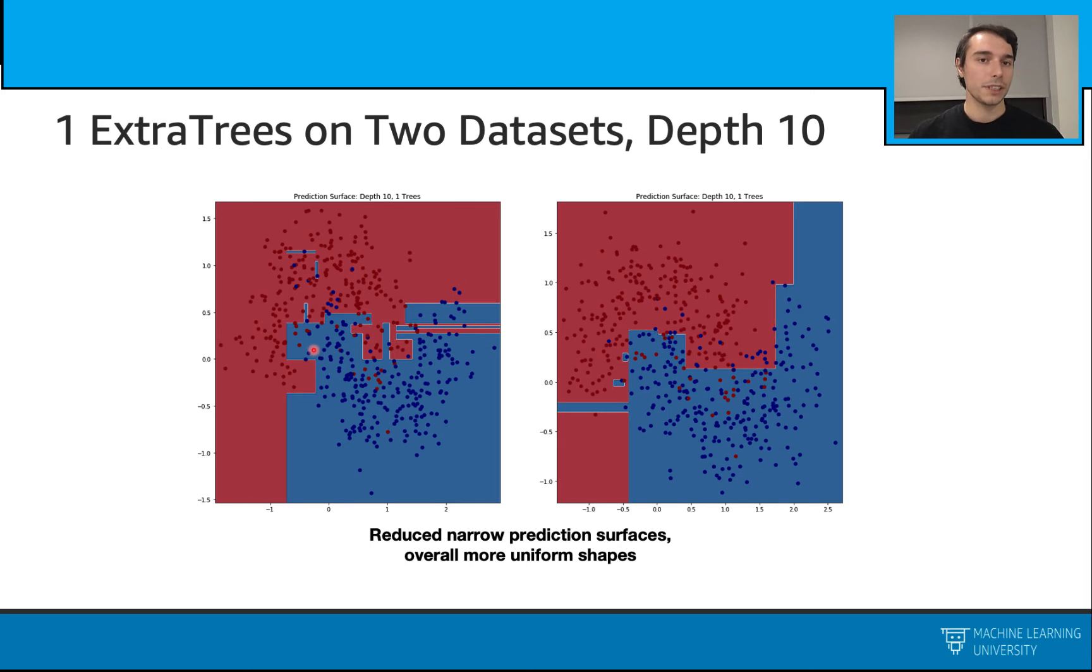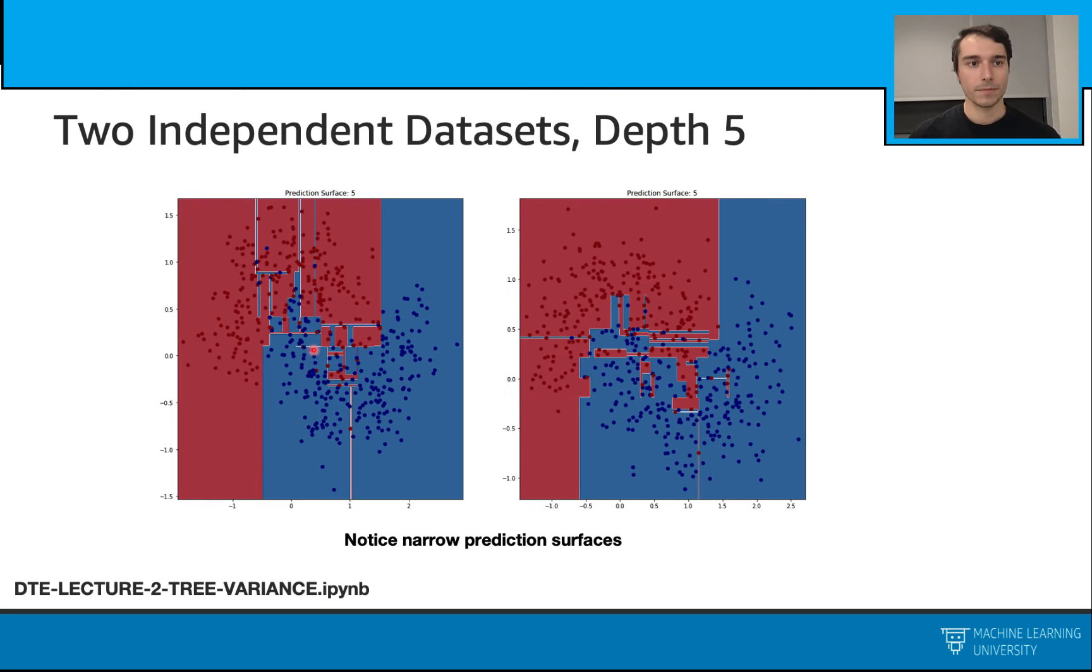Let's have one ExtraTree with depth of 10 here. This time we see that our narrow predictions go away, or we can say that they are reduced. And also we have overall more uniform shapes here compared to this.